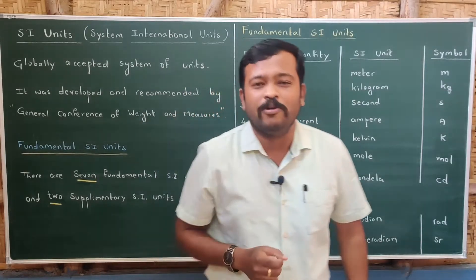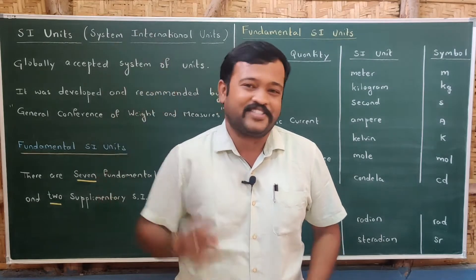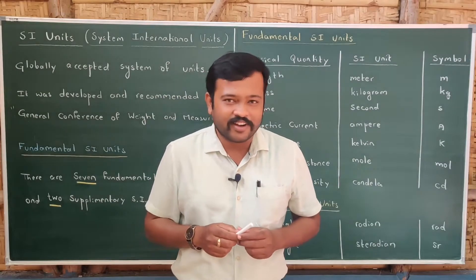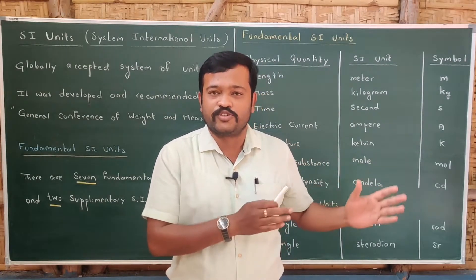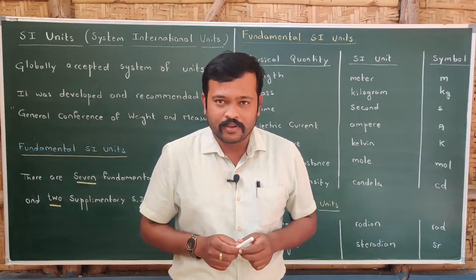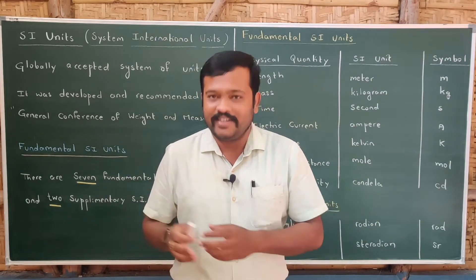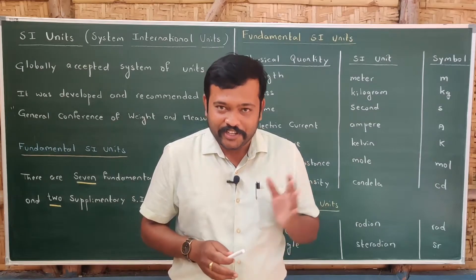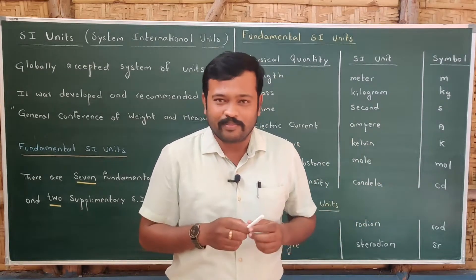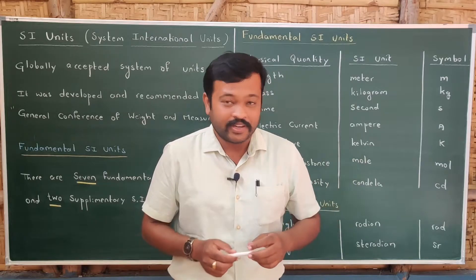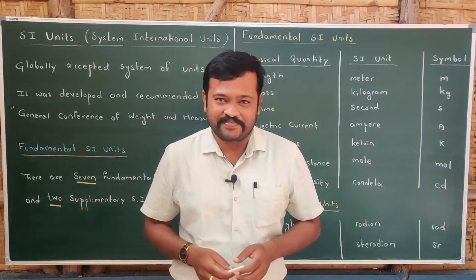So this was the problem faced by scientists of those days. Scientists of different countries used different systems of units for measurements. For example, the Italian community used the MKS system, the German community used the CGS system, and the British community used the FPS system.